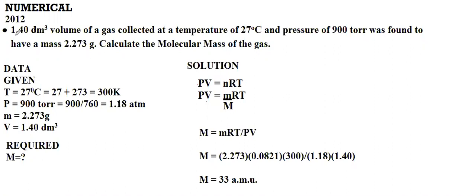We are saying that the volume of a gas, 1.40 dm³, was collected at a temperature of 27°C and a pressure of 900 torr. It was found to have a mass of 2.273 g. We need to calculate the molecular mass of the gas.